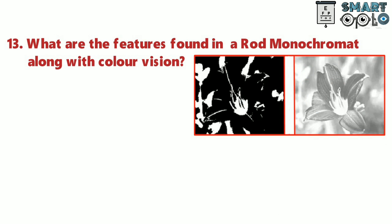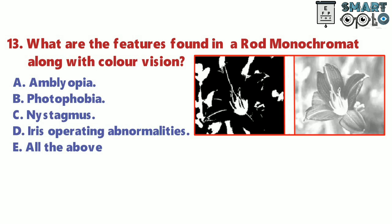Question 13. What are the features found in a rod monochromat along with color vision? A. Amblyopia. B. Photophobia. C. Nystagmus. D. Iris operating abnormalities. E. All of the above.